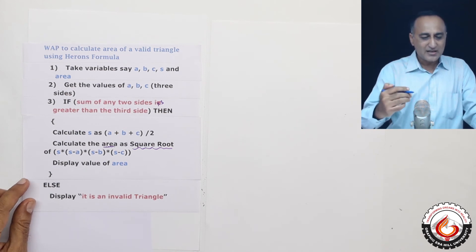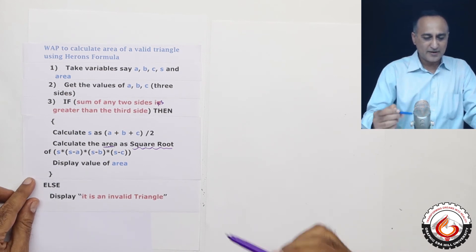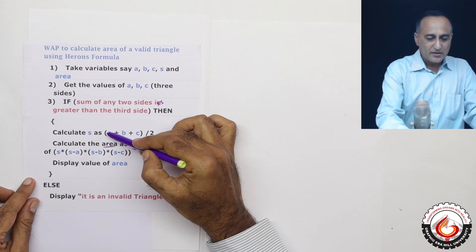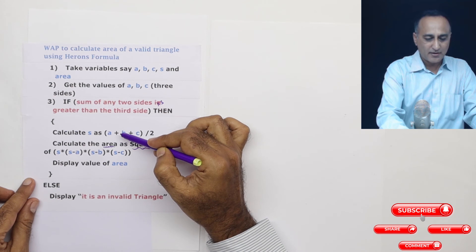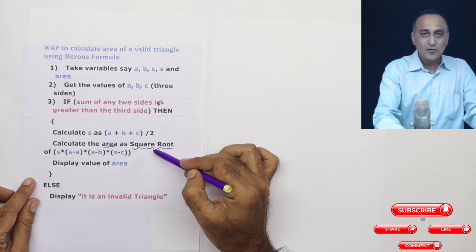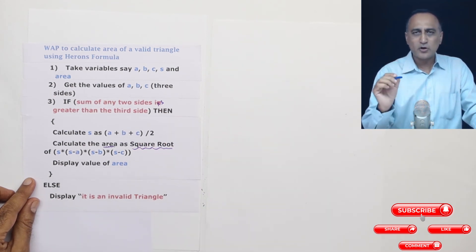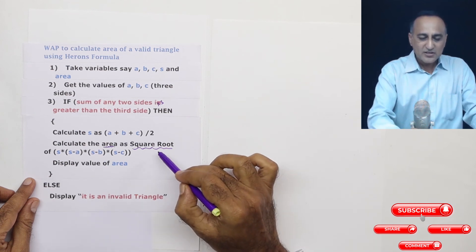So just to rephrase a couple of points you need to understand. This one you need to put in brackets because it will end up dividing C by 2 and add it to A plus B which is not correct.